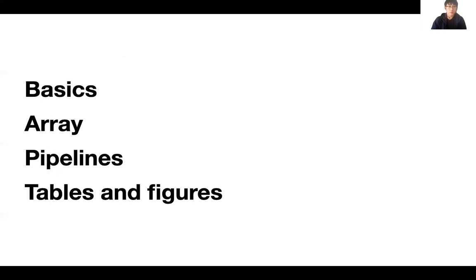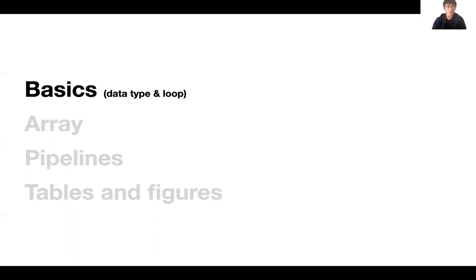There will be four components: Python basics, arrays, pipelines, tables and figures. Today we will talk about basics — this is the most boring stuff of all, but this is where we get the most errors. So let's get familiar with the errors we get from here. I'll be talking about data types and loops today.